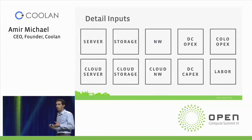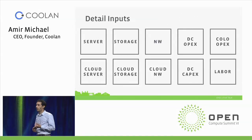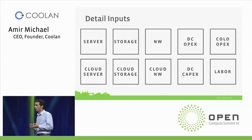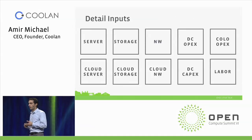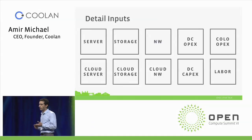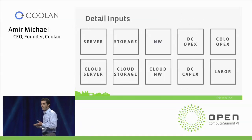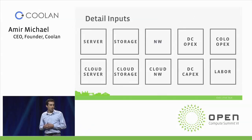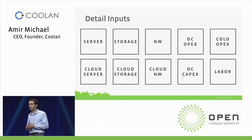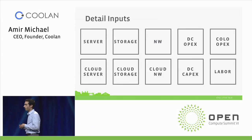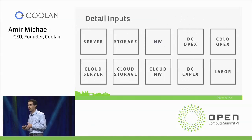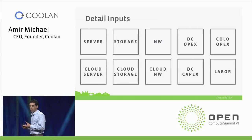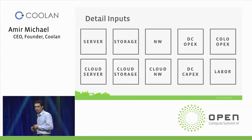I need a server — what does that server look like? Do I go OCP, do I go OEM, how much does it cost, should I build it? How about in the cloud — what does it cost me to actually use an instance from AWS, from Google Compute, from Azure, and what type of performance do I get from there?